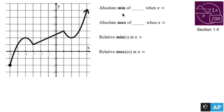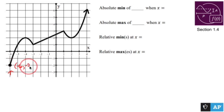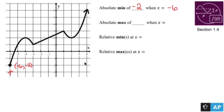The absolute minimum is the smallest point on the graph, which happens to be here. It looks like the absolute minimum is going to occur at the point negative six, negative two, which means the absolute minimum value is negative two, and that happens at the X value of negative six.